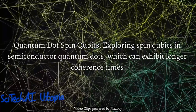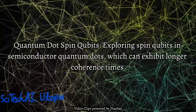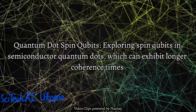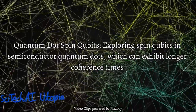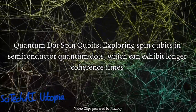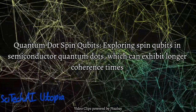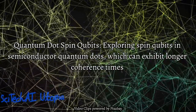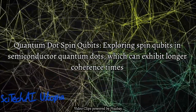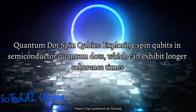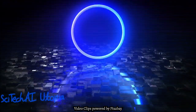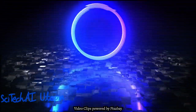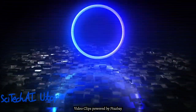Solution 39: Quantum Dot Spin Qubits. Quantum dot spin qubits utilize the spin of electrons confined in semiconductor quantum dots for quantum information processing. Due to the isolation of spins from the environment, these qubits can exhibit longer coherence times, making them a promising candidate for implementing stable and robust quantum computations.